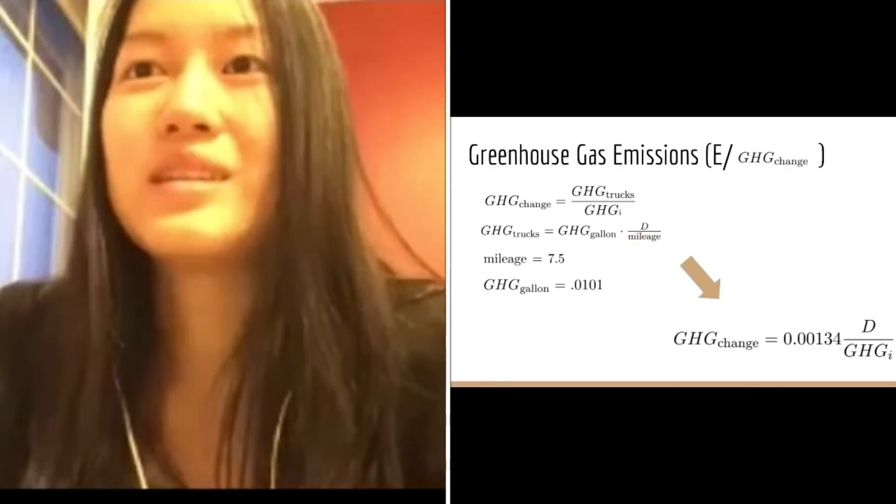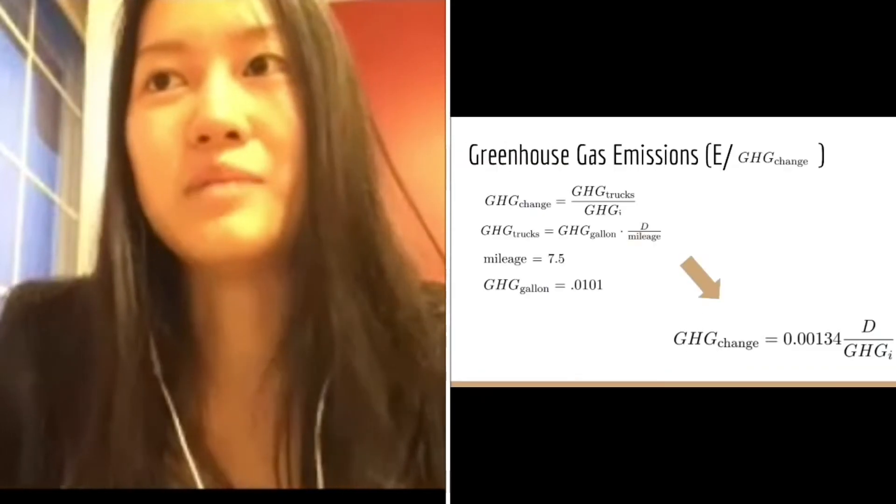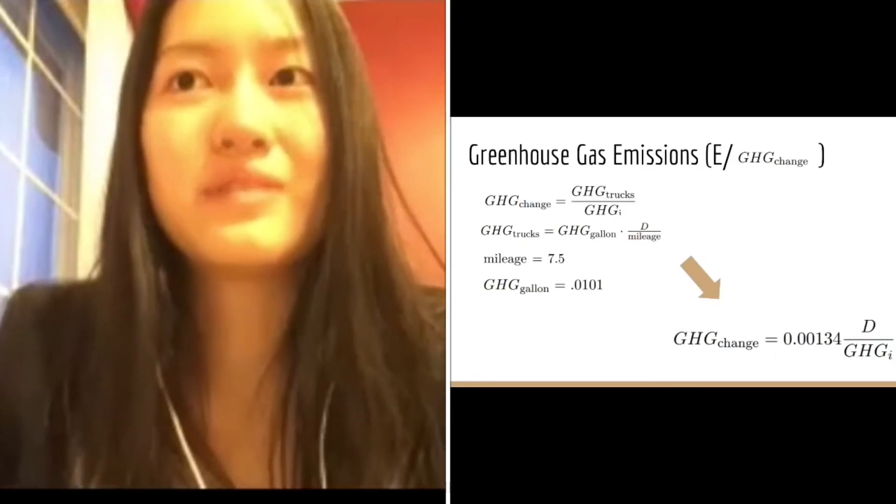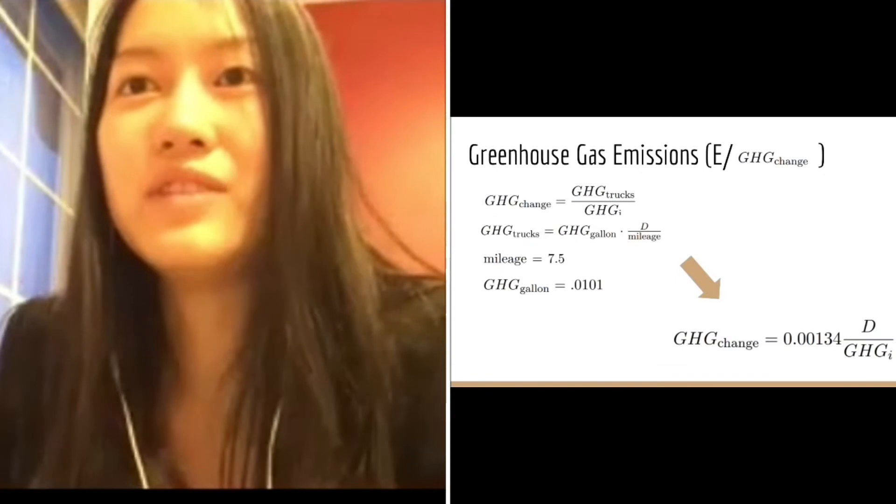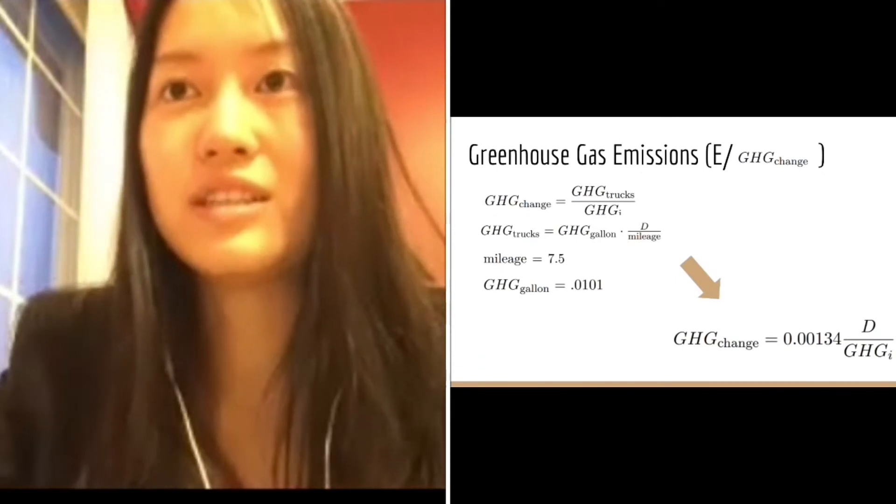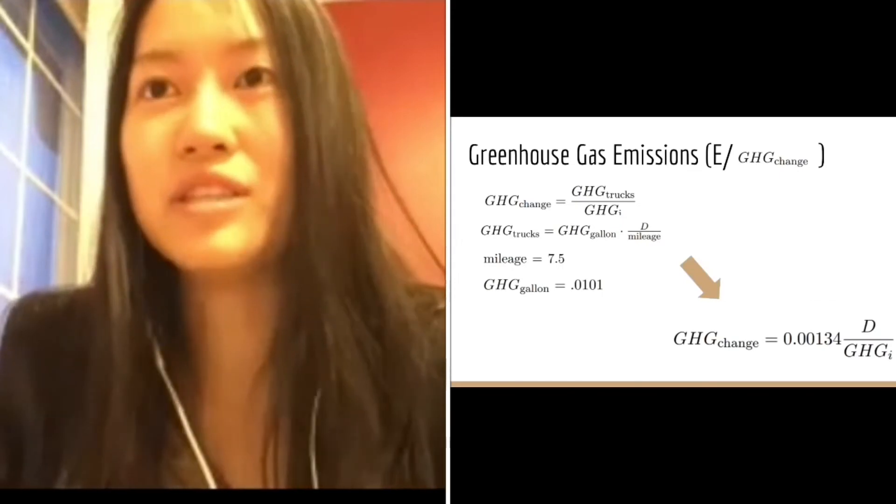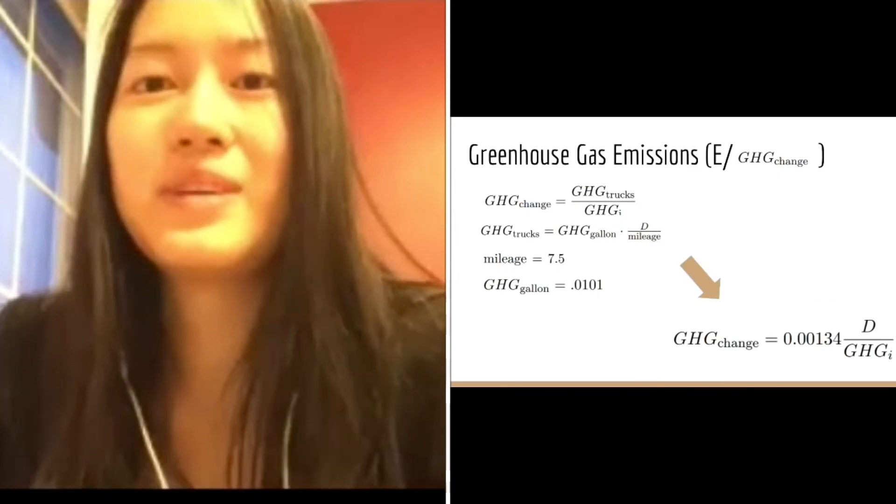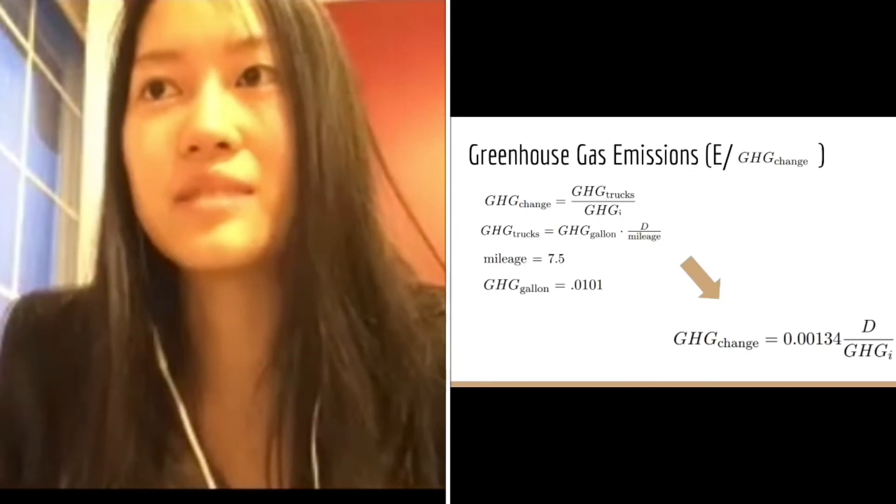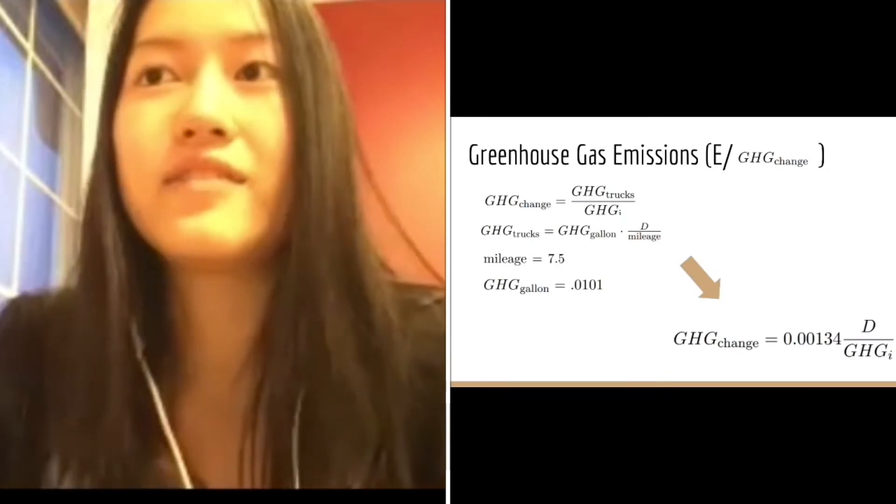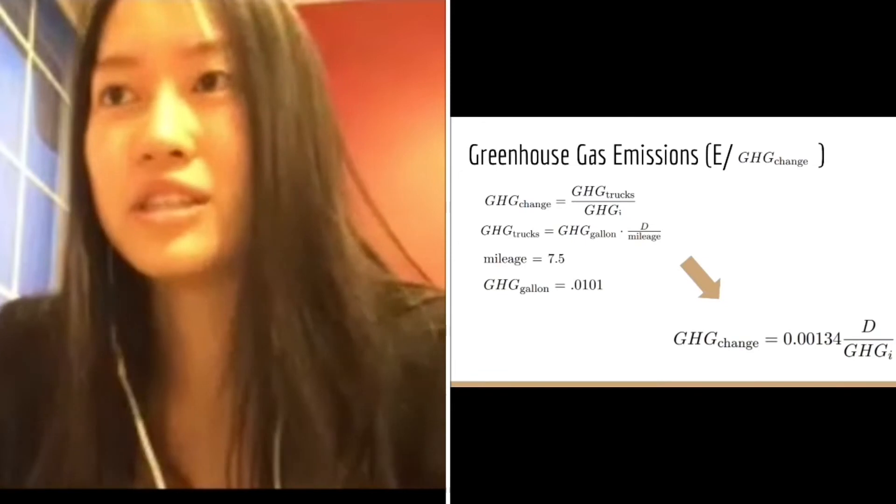Next, we focused on percent change in greenhouse gas emissions from switching to electric trucking because corridors receiving the greatest environmental benefit would have a greater incentive to change. After implementation, there'd be no greenhouse gas emissions from electric trucks. Thus, we determined the percent change in greenhouse gas emissions by calculating the greenhouse gas emissions due to diesel trucks divided by the total greenhouse gas emissions in the corridor.